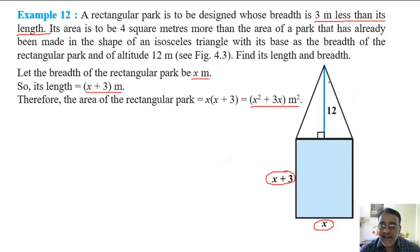Now what is the area of isosceles triangle? Half into base into height. So base is x and height is 12. So we have half into x into 12. So finally 6x. Very good.